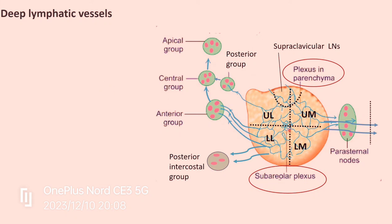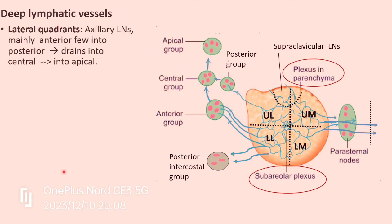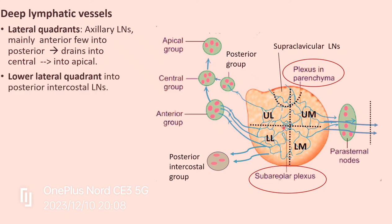Let us divide the mammary gland into four quadrants: upper medial, lower medial, upper lateral, and lower lateral. Lymph from the lateral quadrants — both upper lateral and lower lateral — mainly reaches the anterior or pectoral group of axillary lymph nodes. Some lymph also reaches the posterior group of axillary lymph nodes, then flows to the central group, and from there to the apical group. From the lower lateral quadrant, some lymph also reaches the posterior intercostal group of lymph nodes.